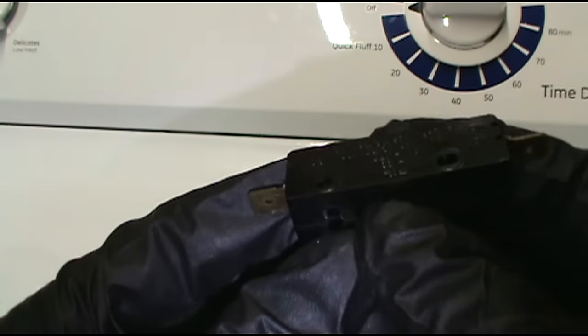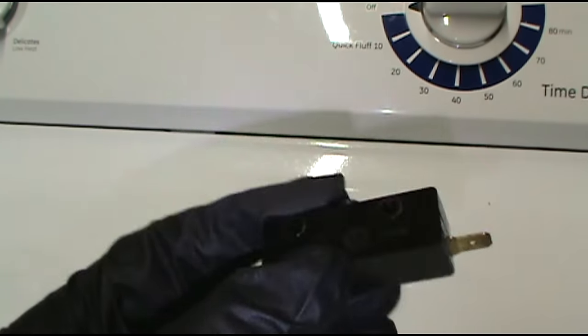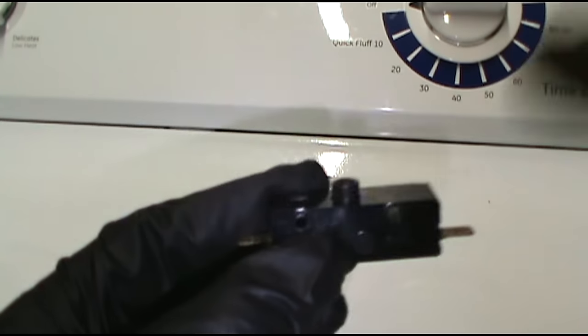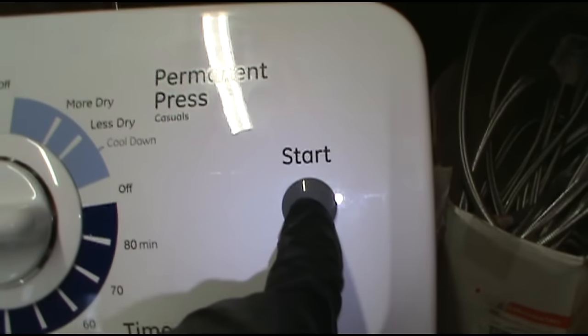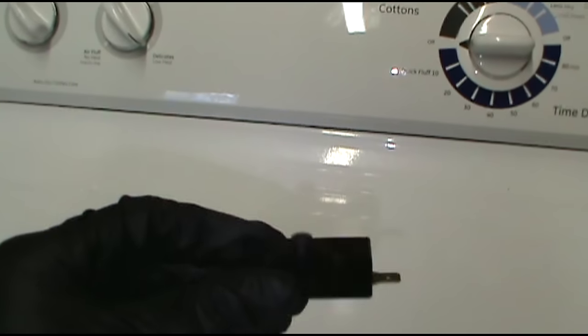You put one meter lead on here and one meter lead on this side and push it in. If it beeps it's good, if it doesn't beep it's bad and you'll need to replace it. It does the same symptoms if this is bad. When you push the start button in and then let go it'll shut off. But in this case, looks like it's going to be a belt issue because my drum is not spinning.